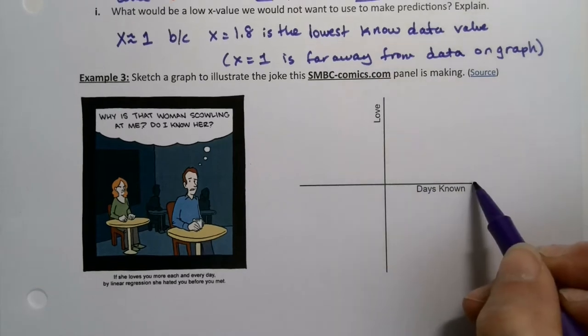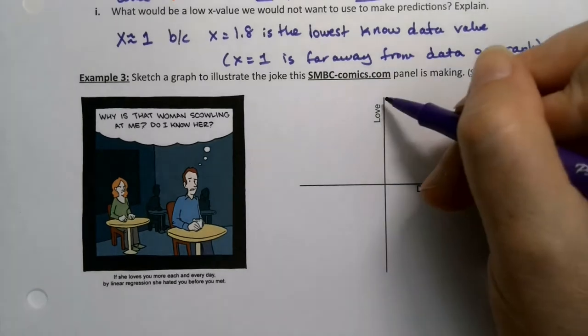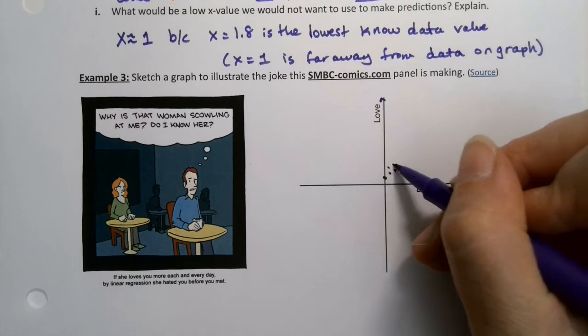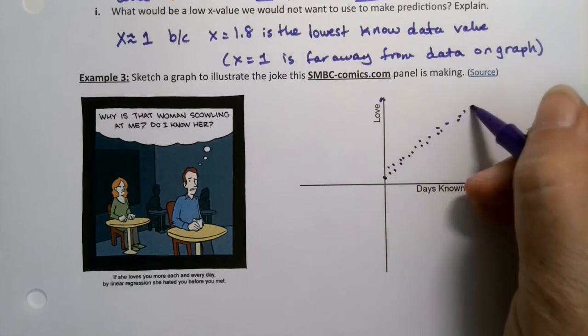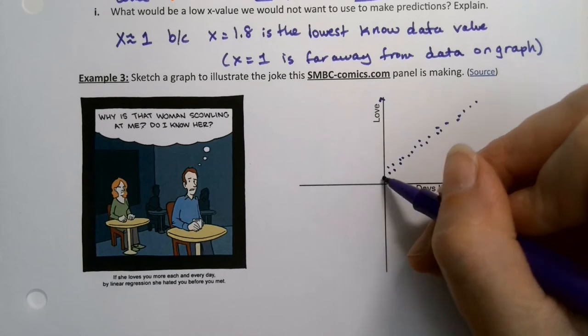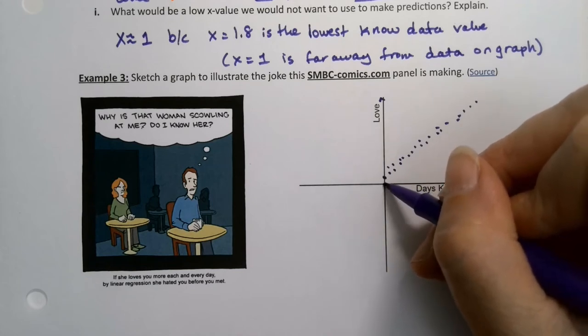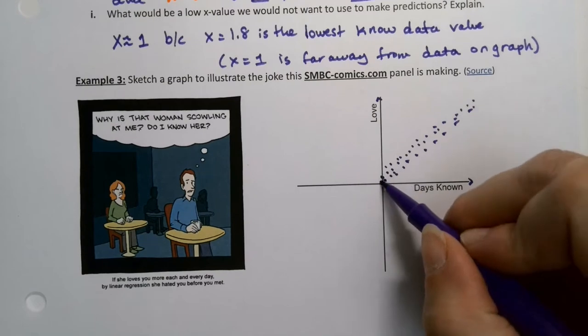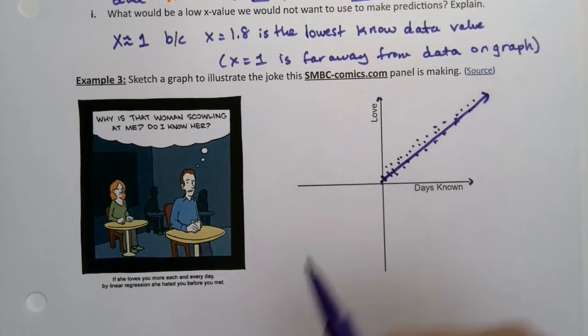So I've got here the x-axis is days known and love. So you meet, and maybe you have love at first sight. I'll give that to you. So love at first sight, and then you love him more and more and more every day. It grows and grows. So here's your regression line right there.